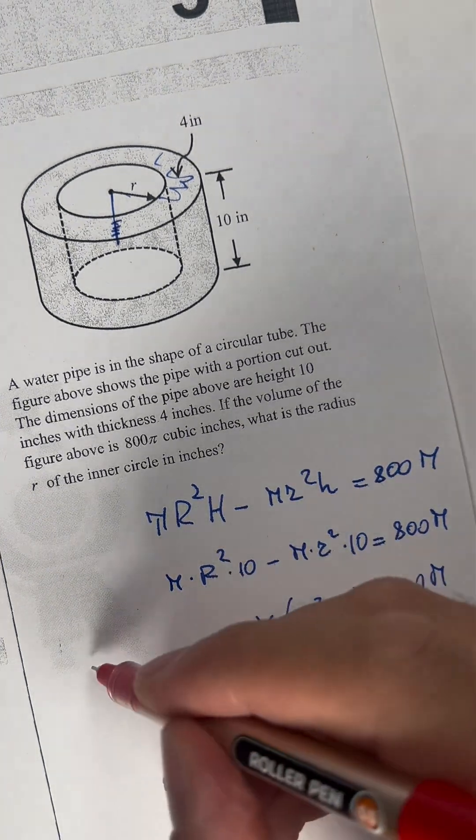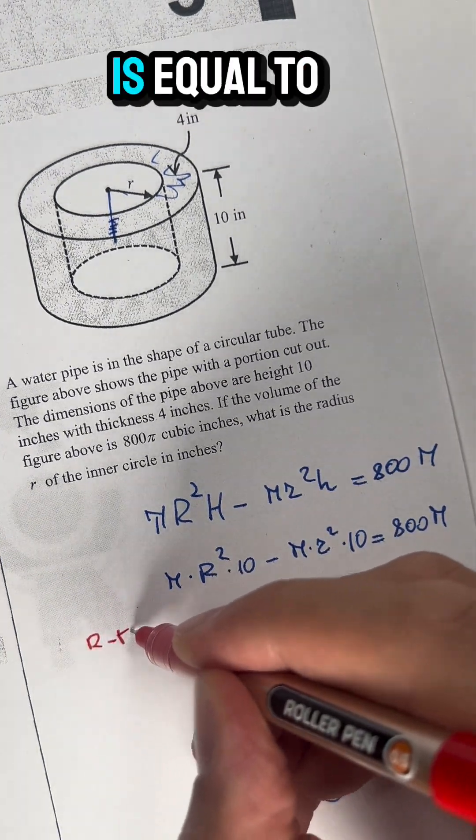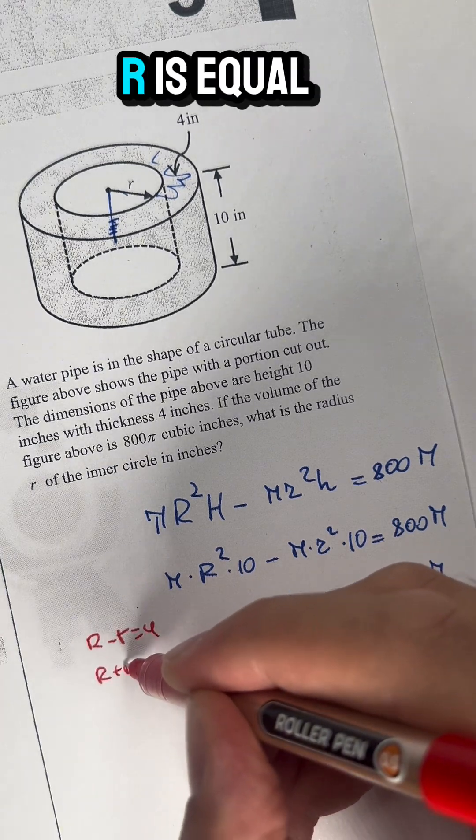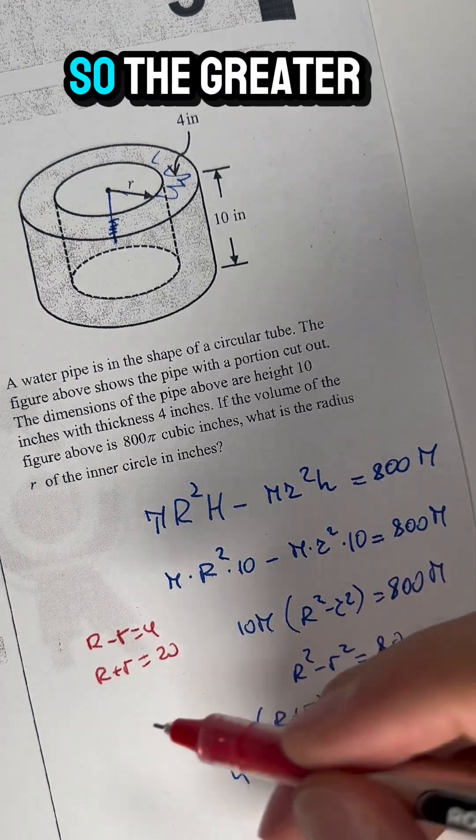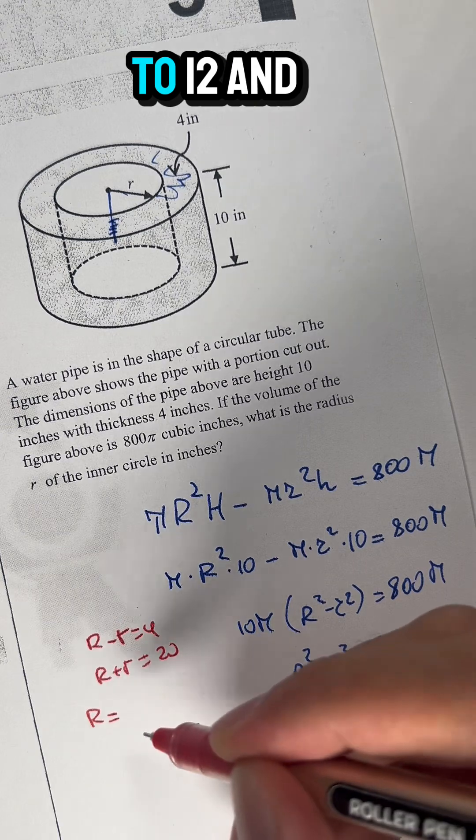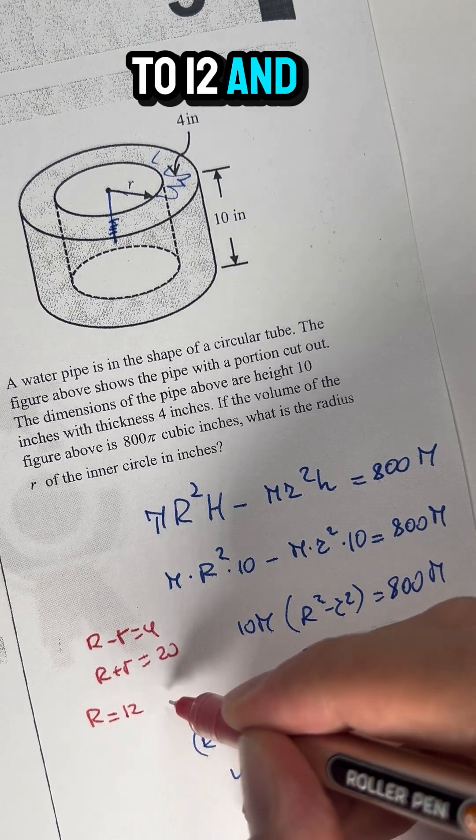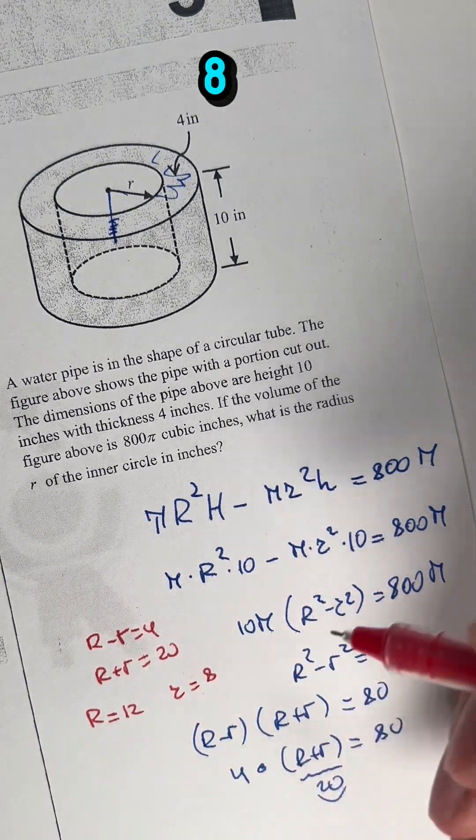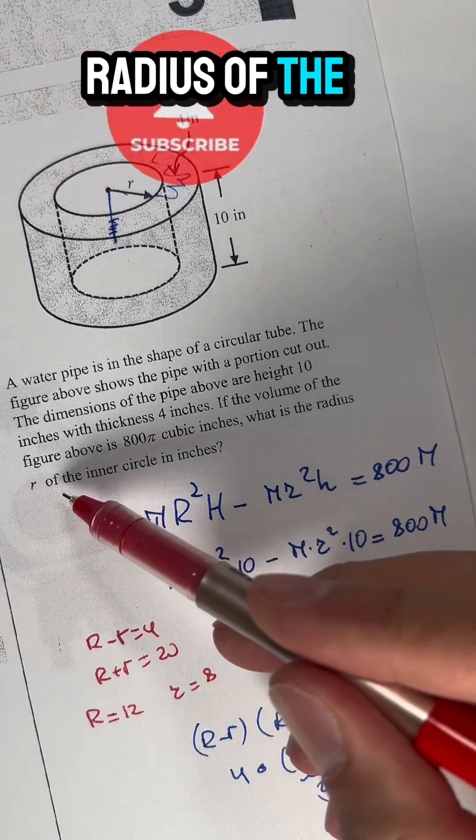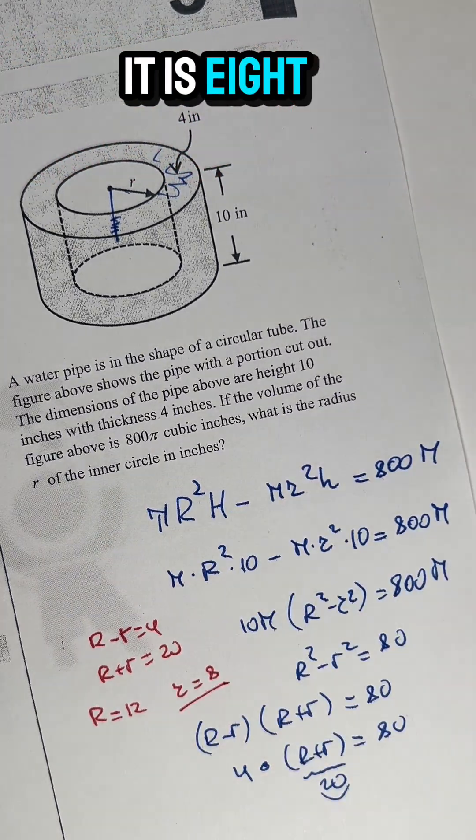It means R minus r equals 4, and R plus r equals 20. So the greater radius is 12 and the smaller one is 8. The question asks for the radius of the inner circle, so the answer is 8.